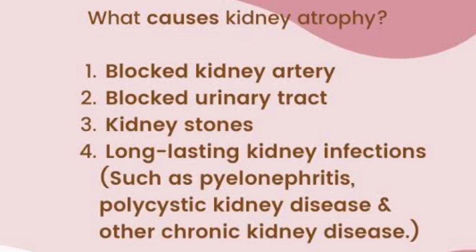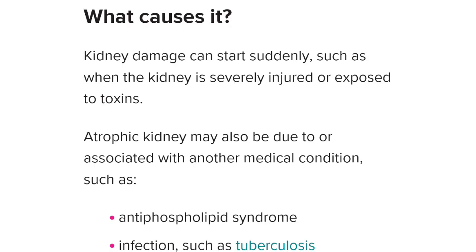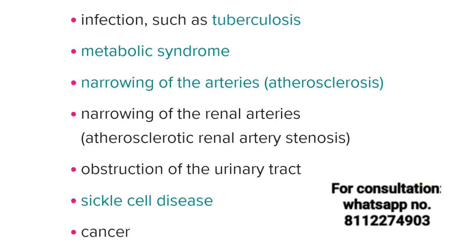What is the reason for kidney atrophy? It can be multiple reasons. If you have a toxin exposure, then the person can have a condition. Besides, many other diseases can cause this condition. If a person has tuberculosis, or a person's arteries have been narrowed, or if a person has sickle cell anemia, or cancer, then they can develop this condition.